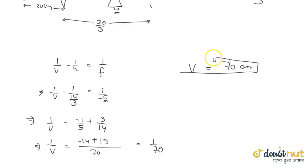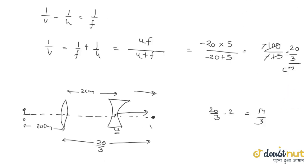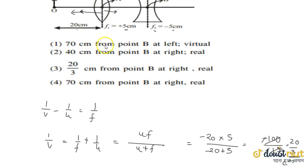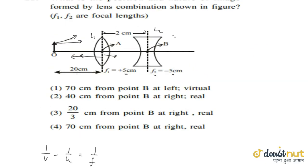70 cm is where the final image forms. You can trace through the options to find the correct option, which is 70 cm from point B. 70 cm is coming positive, and we always take positive to the right from the pole. So the fourth option says 70 cm from B at right, which is correct.